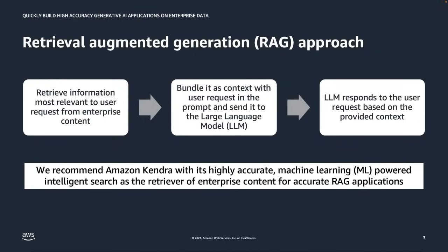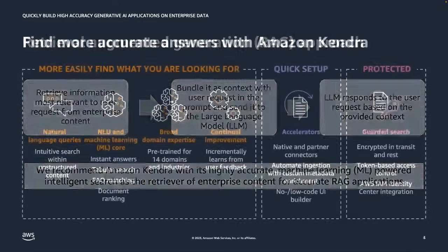It is very critical to retrieve the right, most relevant information to the user's query — only then will you get accurate responses from your large language model. We recommend Amazon Kendra, with its highly accurate machine learning-powered intelligent search, as the retriever of enterprise content for accurate RAG applications. Amazon Kendra has the ability to semantically understand user requests and find the content that is semantically most relevant.